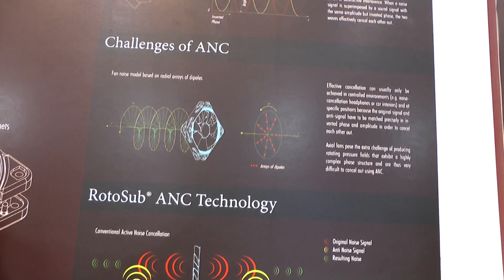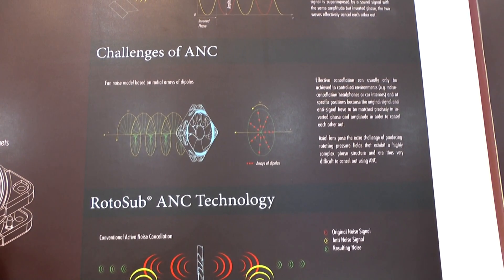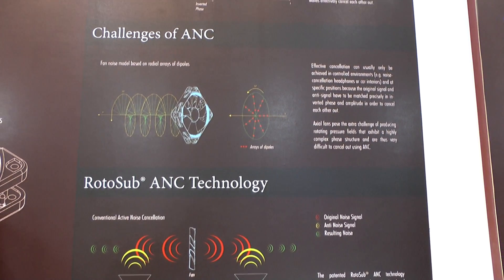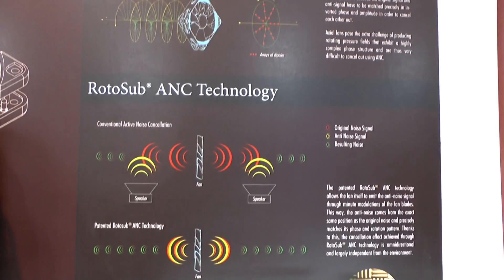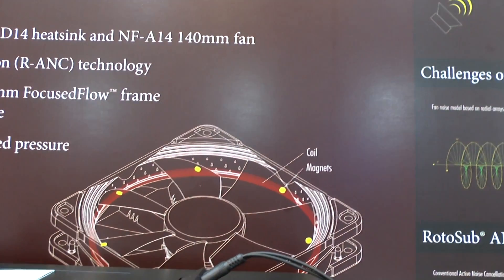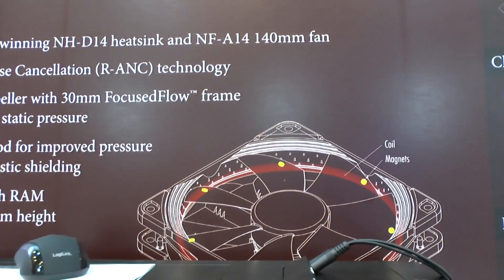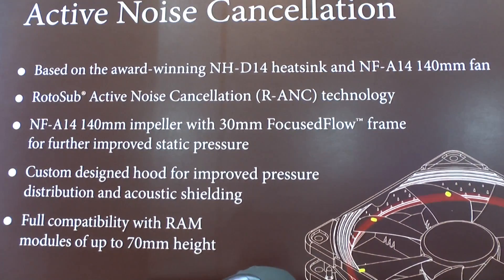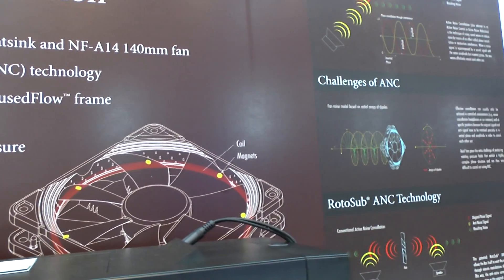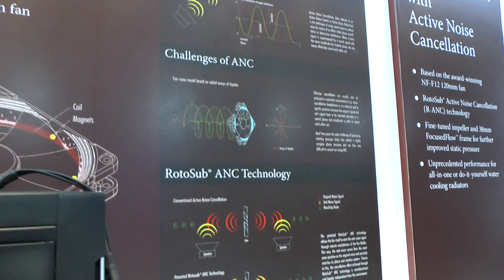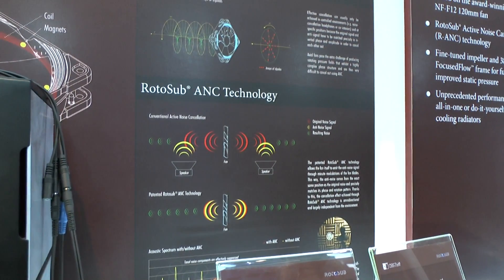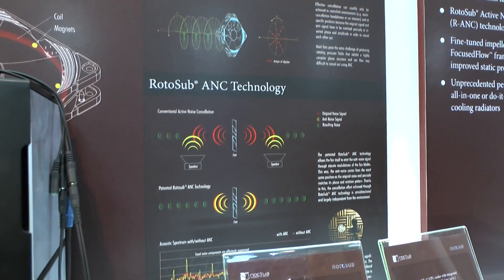Now the brilliant thing about the RotoSub technology that we're using is that we can employ the fan impeller itself to create the anti-noise signal. The way this works is that we have a coil inside the fan frame—you can see it here in red—and magnets sitting inside the blade tips. And when we switch on the coil, we can pull down the blade tips slightly, and when we switch it off again, they will go back up. Now when we do this at a high speed, the fan impeller itself emits an extra sound signal. And this is the sound signal that we use as an anti-noise signal.